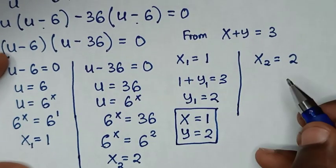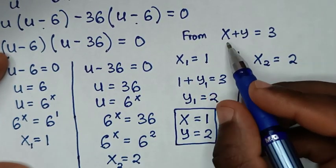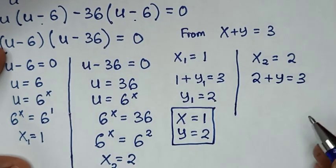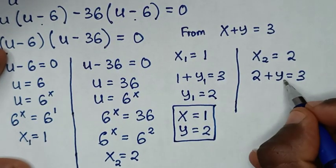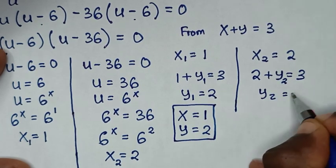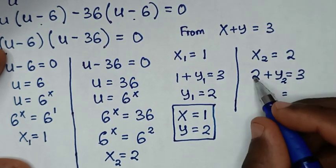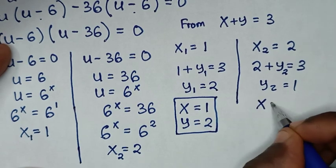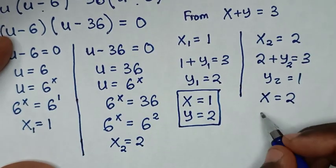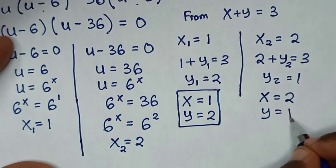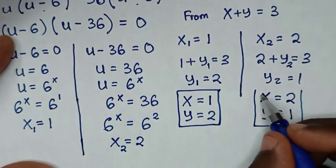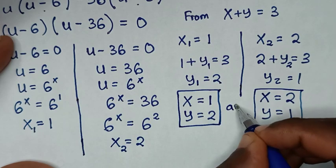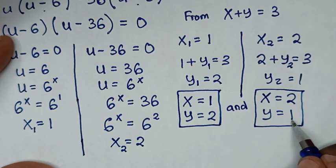For the second solution, we substitute x equals 2 into x plus y equals 3, giving 2 plus y equals 3, so y2 is equal to 3 minus 2, which is 1. Therefore the second solution is x equals 2 and y equals 1. So we have x equals 1 and y equals 2, and x equals 2 and y equals 1.